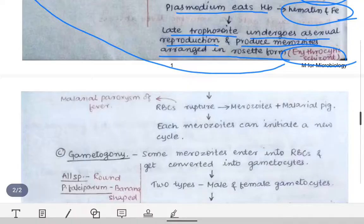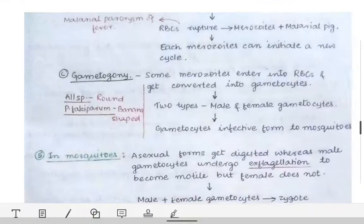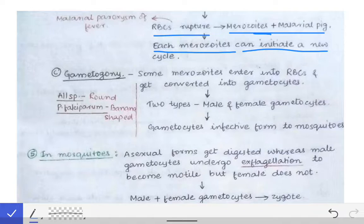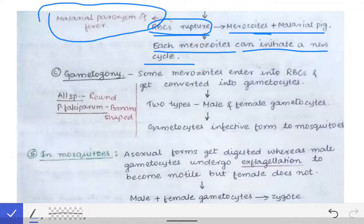After the formation of the erythrocytic schizont, the RBCs rupture, leading to the release of merozoites and malarial pigment. Each merozoite can initiate a new cycle. The rupture of RBCs also releases toxins, hematin, and iron, which cause the malarial paroxysm of fever. This fever occurs on the third day because the erythrocytic cycle of Plasmodium takes approximately three days. When the cycle completes and the RBCs rupture, fever occurs on the third day.